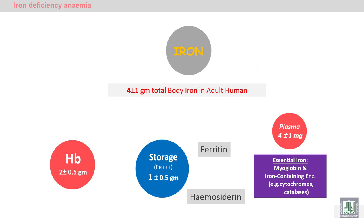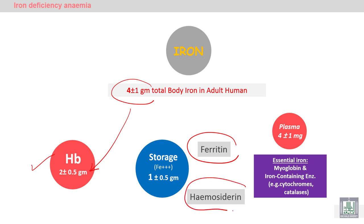Iron is important for heme formation in hemoglobin, so most of our iron is present in the hemoglobin. We also have iron in the form of ferritin and hemosiderin as storage iron. Iron is also present in the plasma protein myoglobin and in enzymes like cytochromes and catalase.